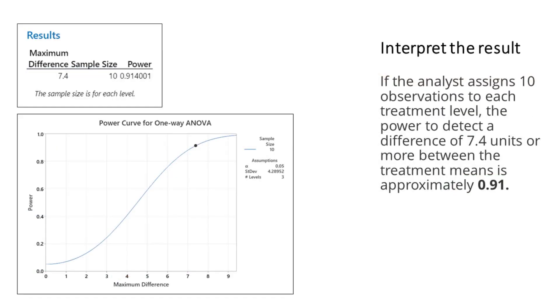If the analyst assigns 10 observations to each treatment level, the power to detect a difference of 7.4 units or more between the treatment means is approximately 0.91. This finding highlights the precision and accuracy of our research methods, showing a high probability of correctly identifying significant differences.